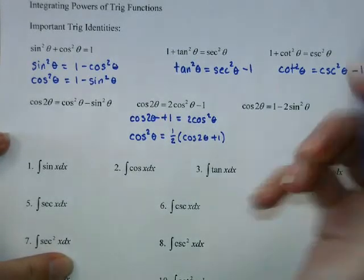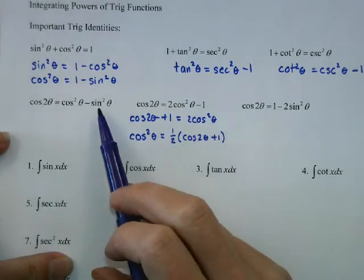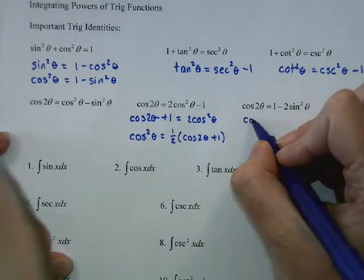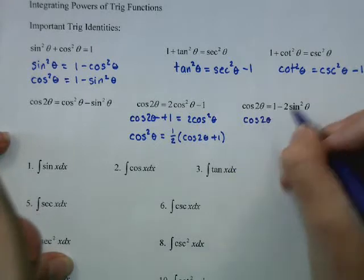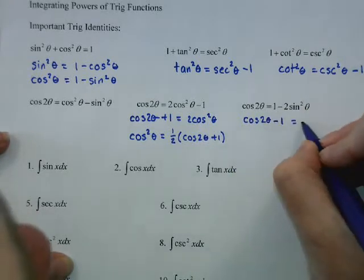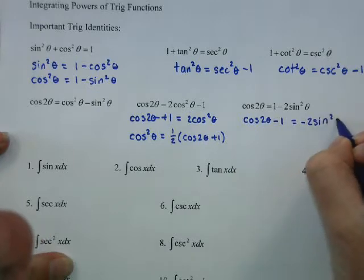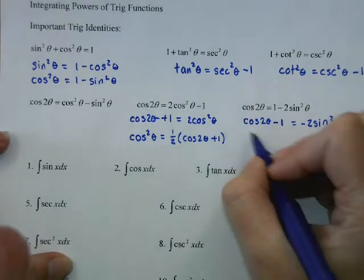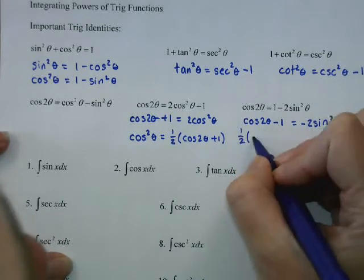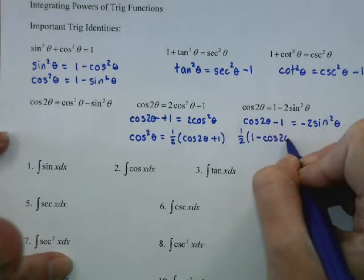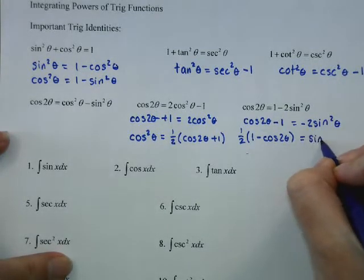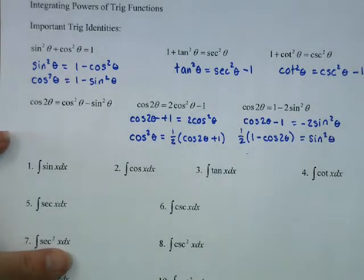The same double angle identity for cosine can be written in terms of sine. Replacing cosine squared with 1 minus sine squared and solving for sine squared — multiplying by negative one half — we get sine squared theta equals one half times the quantity 1 minus cosine 2 theta.